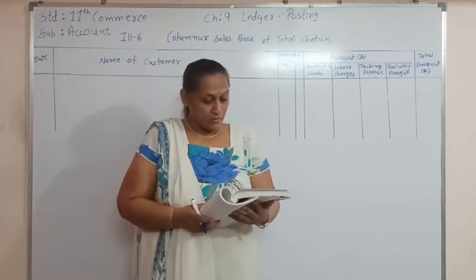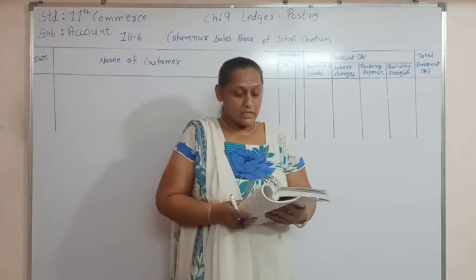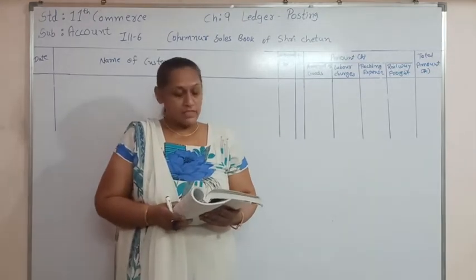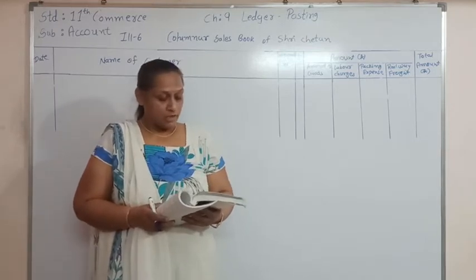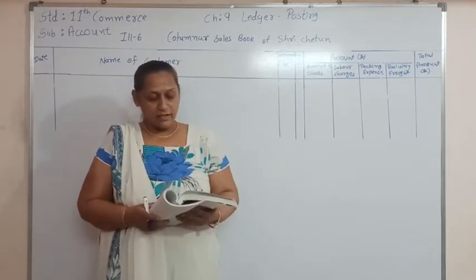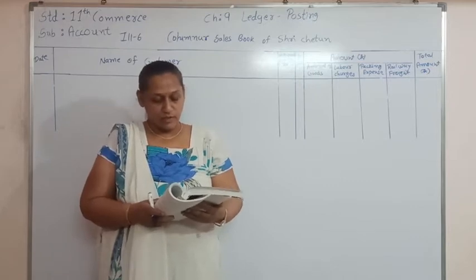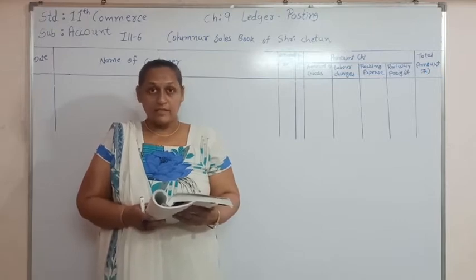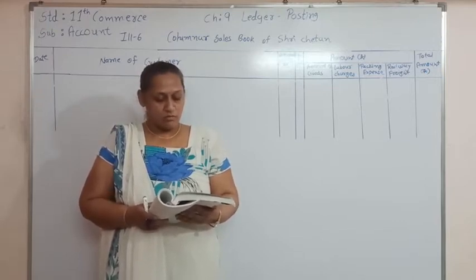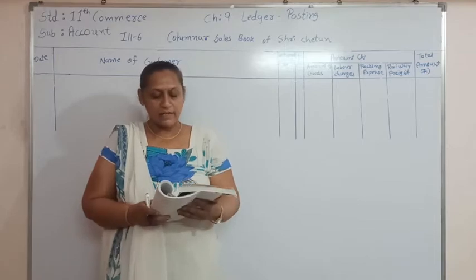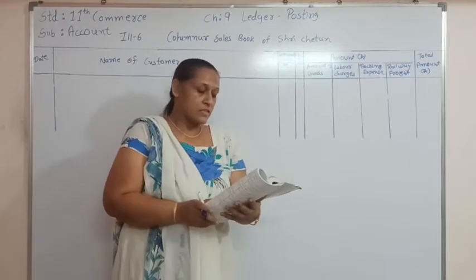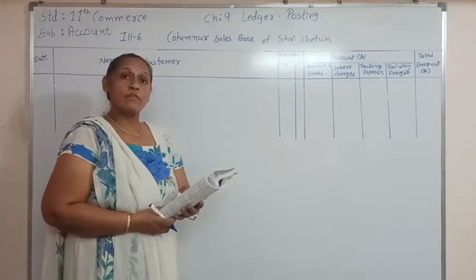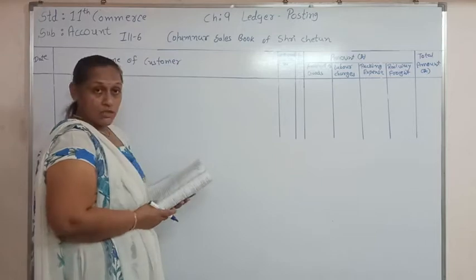Transaction number 1: From the following information of Chenpan, prepare columnar sales book and make its posting. Goods of rupees 8000 sold to Prakhar, adding 10% profit, invoice number 301, dated 8/6/15. Send to him inclusive of labour charges 480 and packing expense 220. So here the cost of goods is 8000 and we have added the profit of 10%, so that will be 800. Total will be 8800.